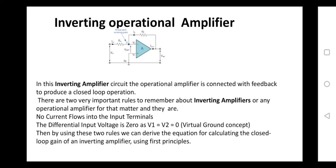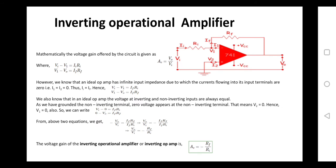We need to remember two important rules for inverting amplifiers. First, since the input impedance of an op-amp is infinite, no current flows into the input terminals. Second, because of the virtual ground concept, whatever voltage is present at the positive terminal of an op-amp must be equivalent to that at the negative terminal. So the differential voltage is equivalent to zero because of the virtual ground concept. Using these two rules, we derive the expression for voltage gain of an inverting op-amp.